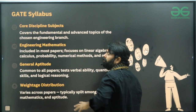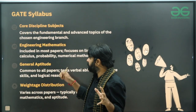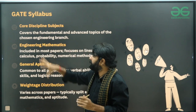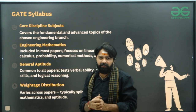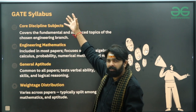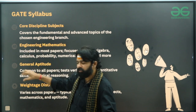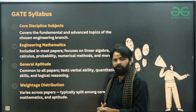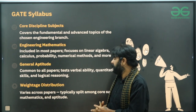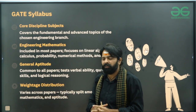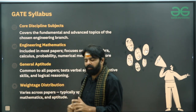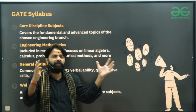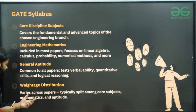The entire GATE syllabus depends on three things: general aptitude, mathematics, and your core discipline subjects. The GATE exam is structured around these three sections. The aptitude and mathematics distribution is fixed, but the subject-specific marks distribution for each subject may change from year to year.